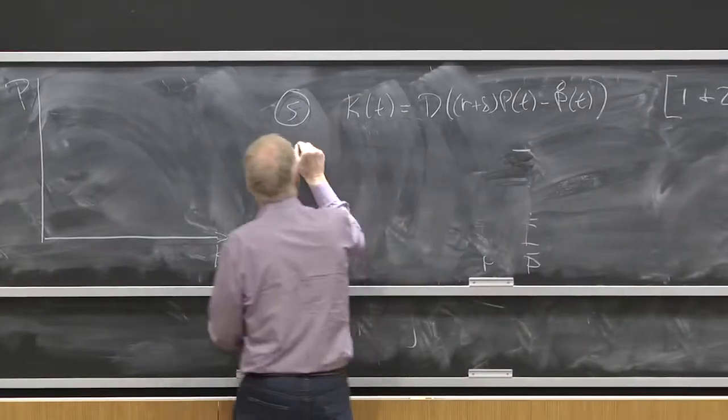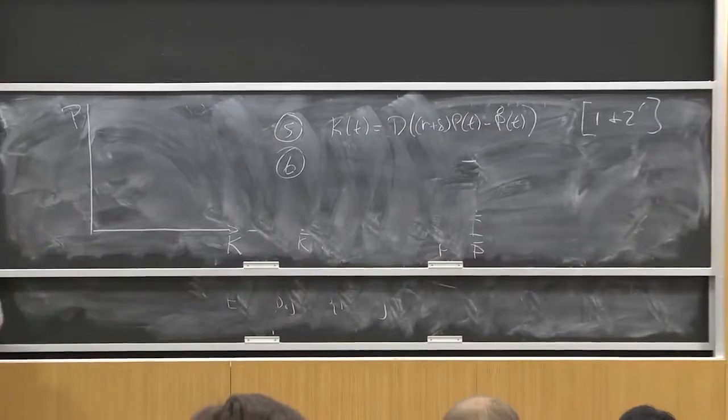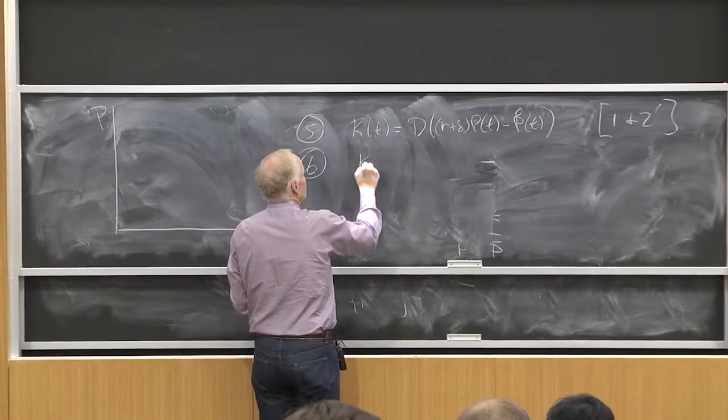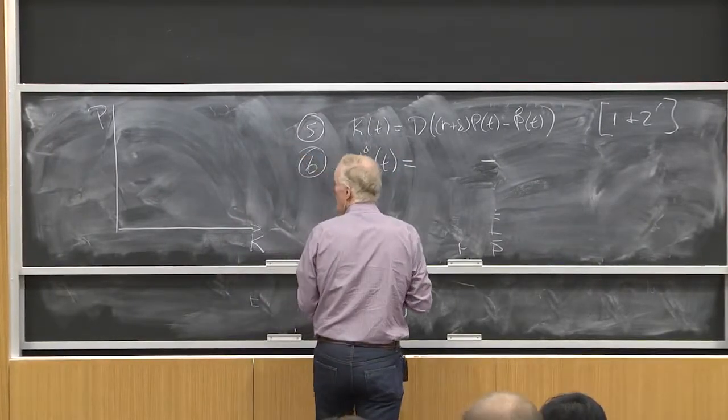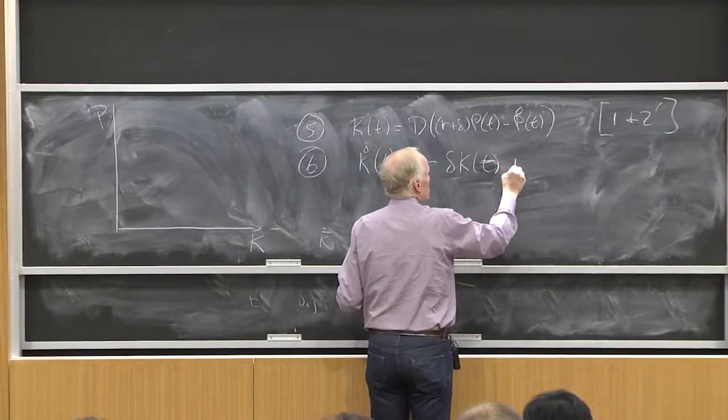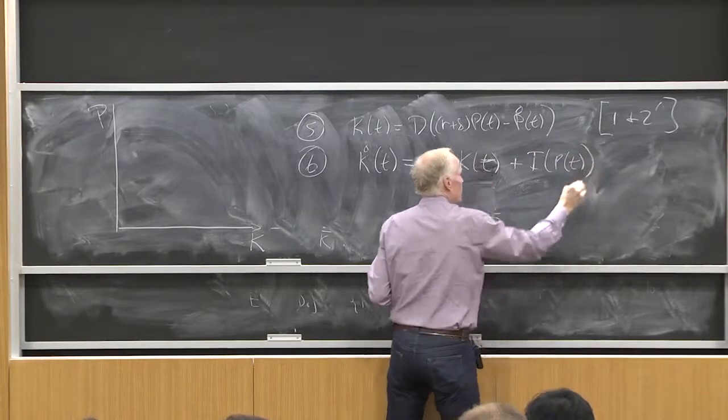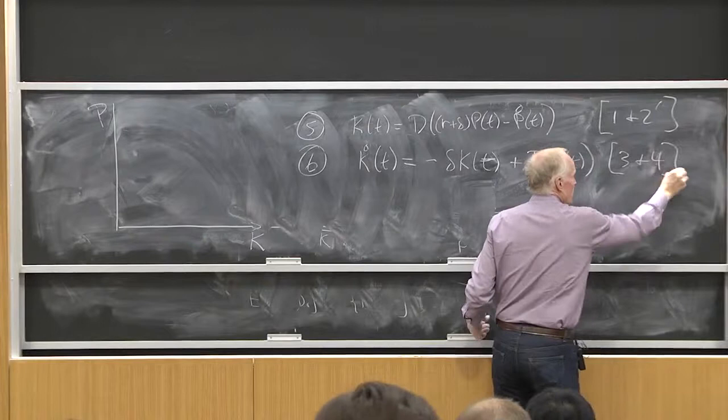And then equation 6, I'm going to combine 3 and 4 by substituting in here. I get k dot of t equals minus delta k of t plus i of p of t. That uses 3 and 4.